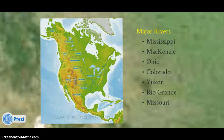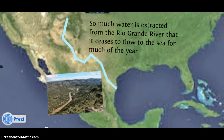Some of the major rivers of North America depicted on this map include the Mississippi, the Mackenzie River, Ohio, Colorado, Yukon, Rio Grande, and Missouri. Did you know? So much water is extracted from the Rio Grande River that it ceases to flow to the sea for much of the year.